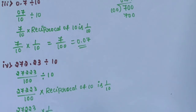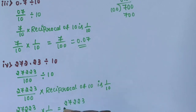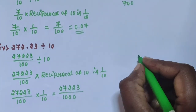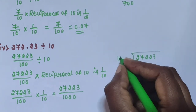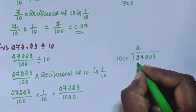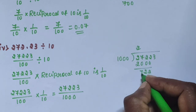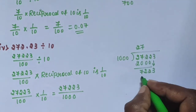So 27223 divided by 100 into 1 by 10. Multiply these two fractions: 27223 into 1 is 27223, and 100 into 10 is 1000, giving 27223 divided by 1000.